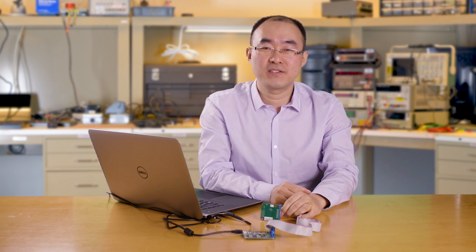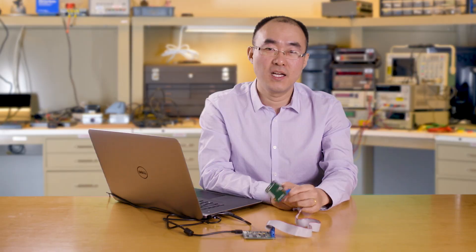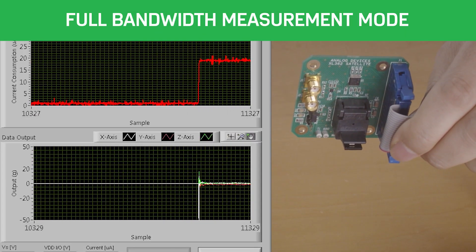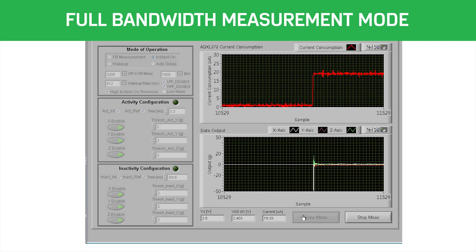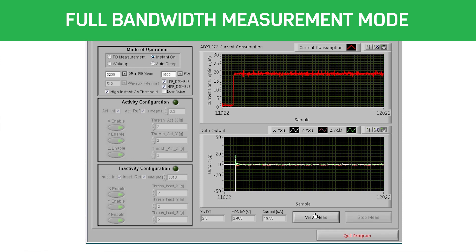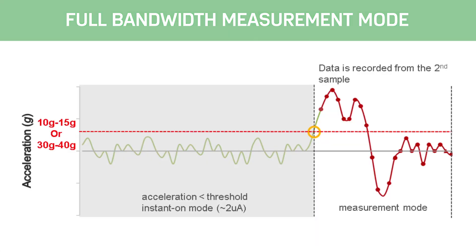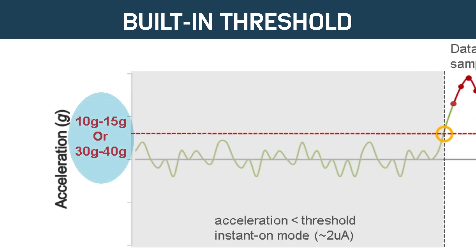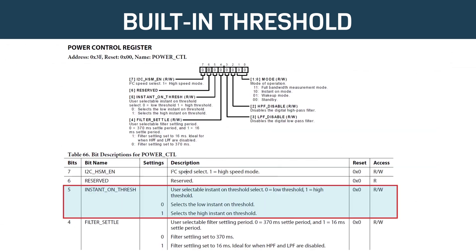When we add a shock event on the board to make the acceleration exceed the built-in threshold, the ADXL372 switches into full bandwidth measurement mode immediately and can capture the impact profile. The built-in threshold is either 10G to 15G or 30G to 40G, and it can be chosen by using the instant-on threshold bit.